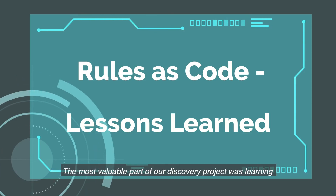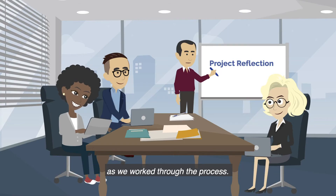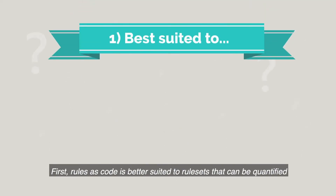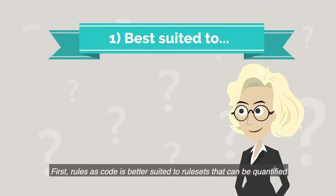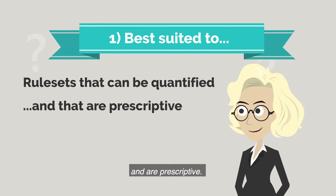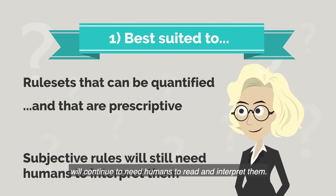The most valuable part of our discovery project was learning as we worked through the process. First, rules as code is better suited to rule sets that can be quantified and are prescriptive. Subjective rules — those that contain words like 'may' or 'could' — will continue to need humans to read and interpret them.